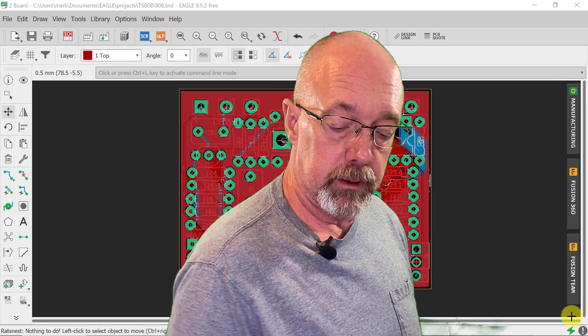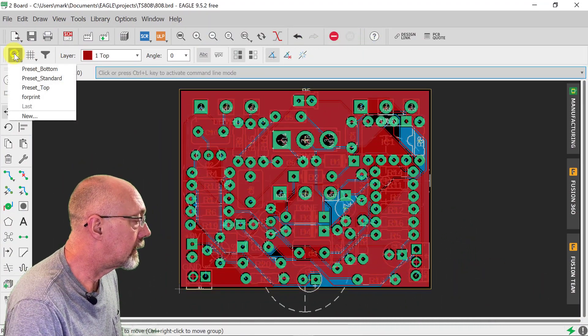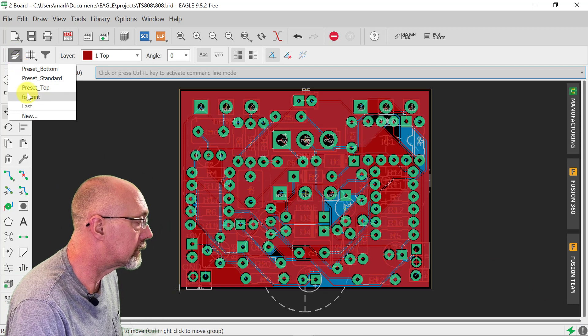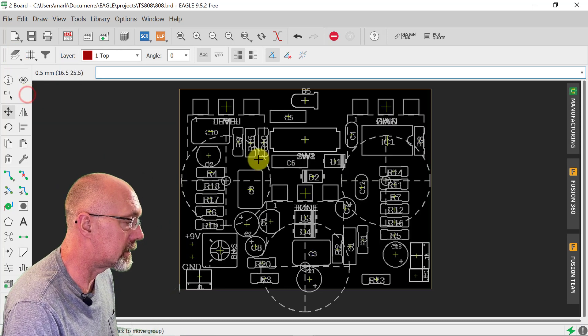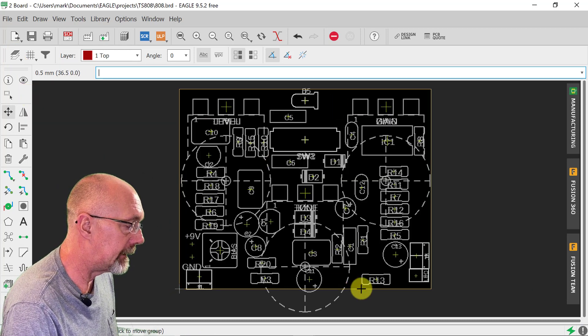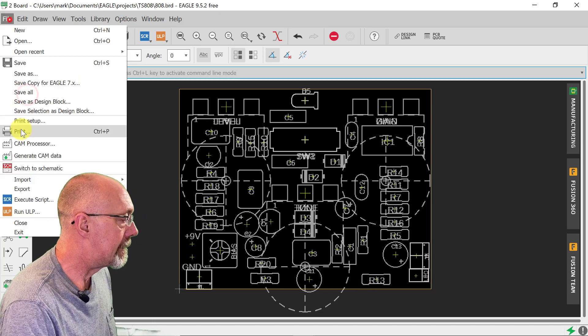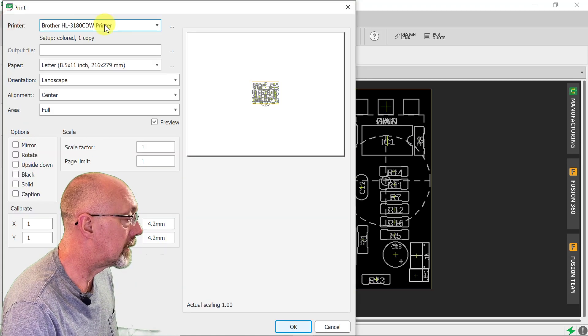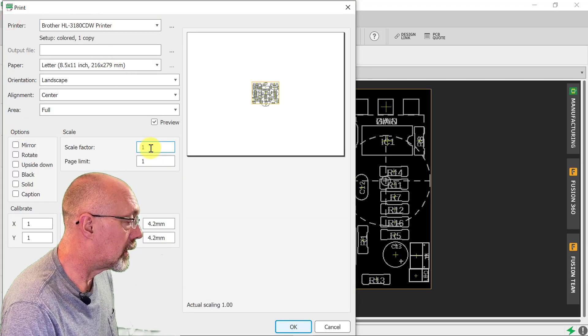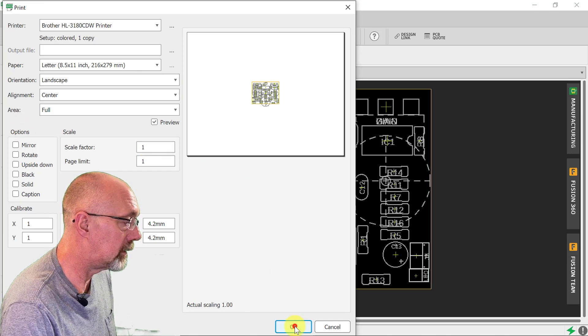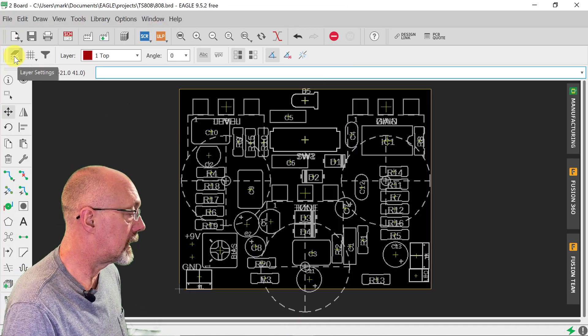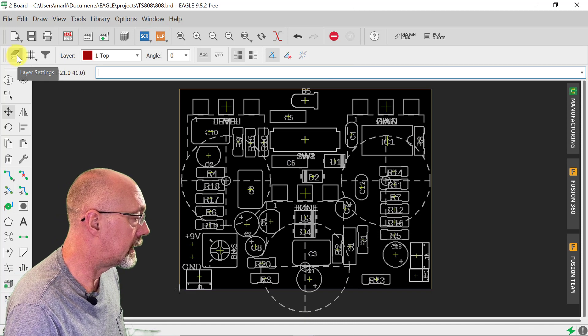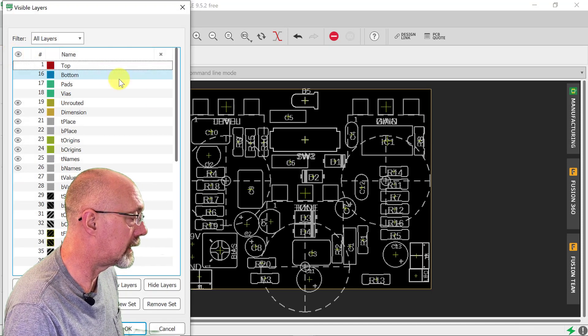Okay, let's get this printed out. Let's see what we have here. For print, we already set that so it only prints everything we need. Alright, so let's print. I have my printer. Scale factor 1. Perfect. Alright, I'm going to go get that and I'll be right back.